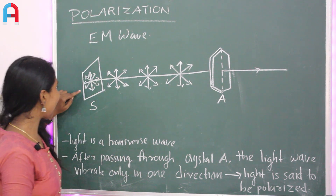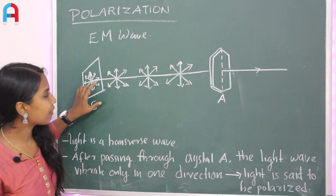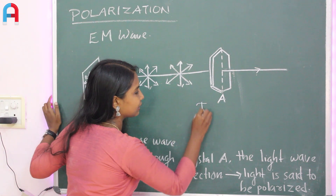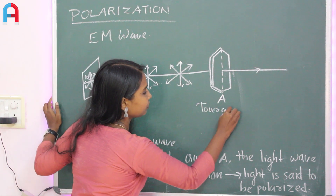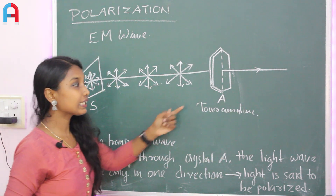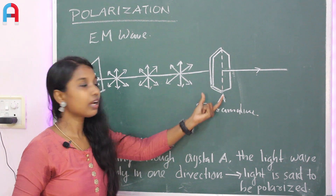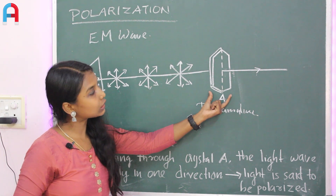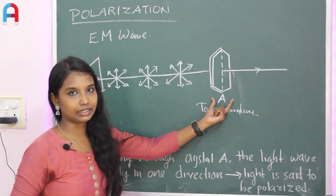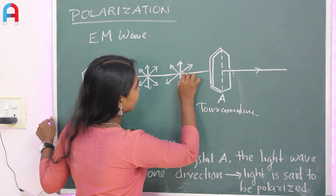Here we have a source producing an EM wave. This EM wave is traveling. We then set up a crystal on the path of the wave, aligning it with the field defined by S1.